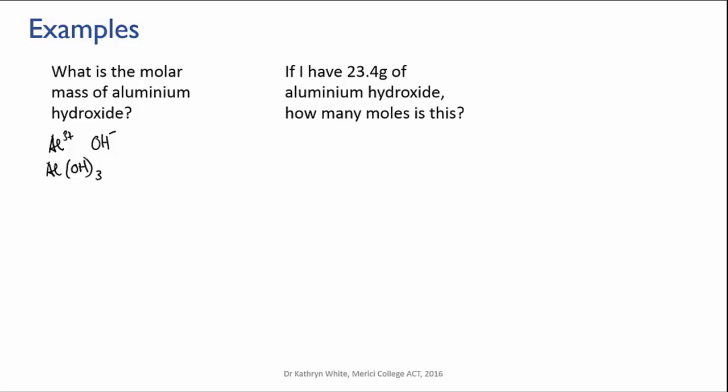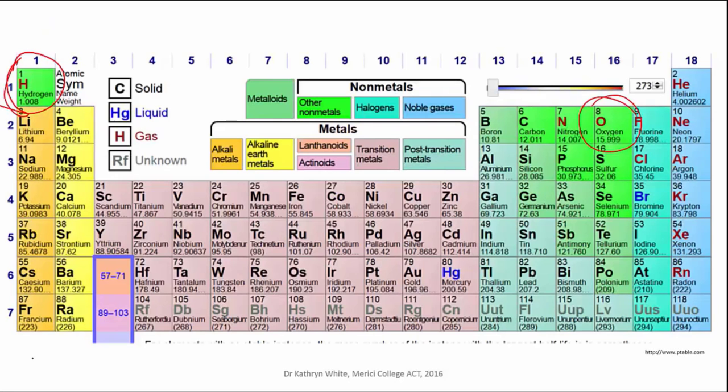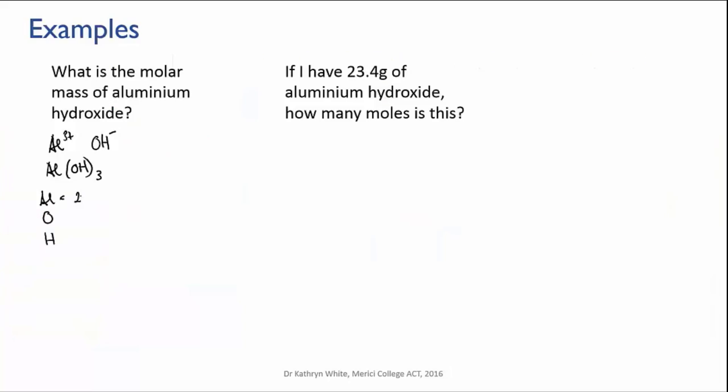Now to work out its molar mass, you can see I'm going to need the molar masses of aluminum, oxygen, and hydrogen, so I'm going to write those down first. Now I have oxygen and hydrogen already: 15.999 and 1.008. We add aluminum to that: 26.981.